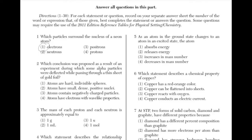Which conclusion was proposed as a result of an experiment during which some alpha particles were deflected while passing through a thin sheet of gold foil? The answer is 2: atoms have small, dense positive nuclei. An alpha particle has a positive charge and like charges repel. So since the alpha particle was deflected from the nucleus, the nucleus would also have a positive charge.